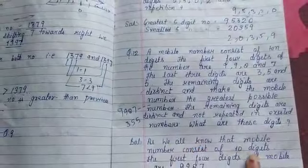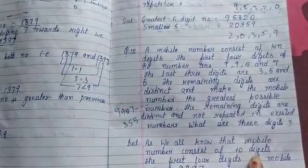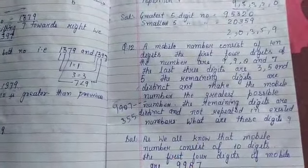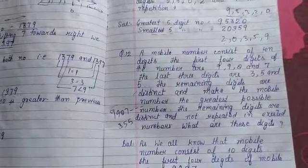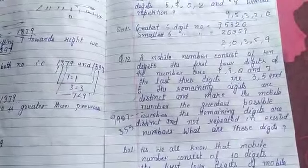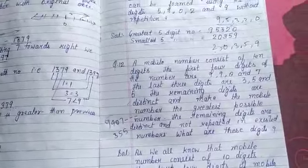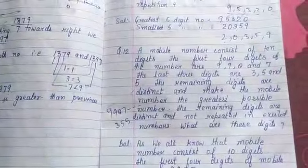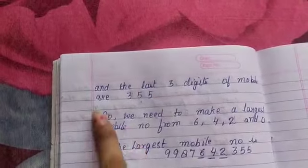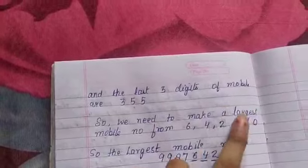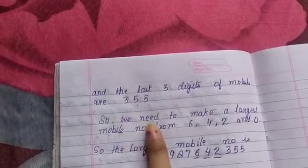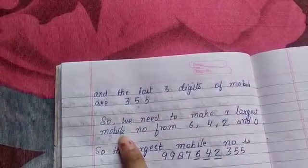As we know, a mobile number consists of 10 digits. The first 4 digits are 9, 9, 8, 7 and the last 3 digits of the mobile number are 3, 5, 5. We need to make the largest mobile number.